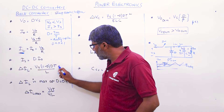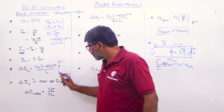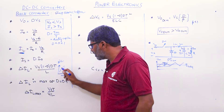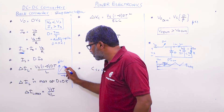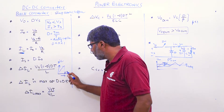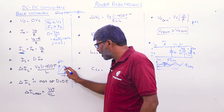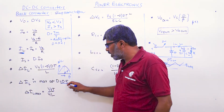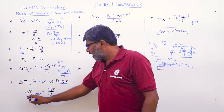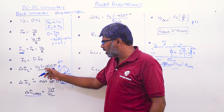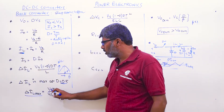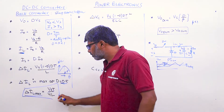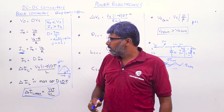The ripple ΔIL is very important for the examination. As duty cycle D increases, ΔIL increases, reaching its maximum when D = 0.5 (50% duty cycle). Beyond 0.5, ΔIL decreases. Substituting D = 0.5, the maximum peak-to-peak ripple current is: ΔIL_max = Vs × T / (4L).